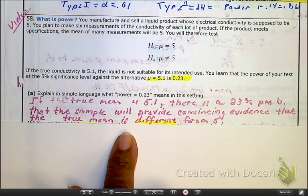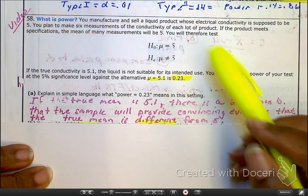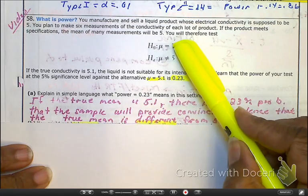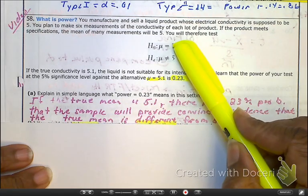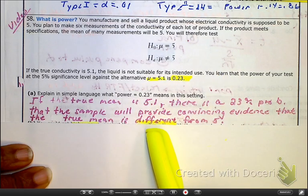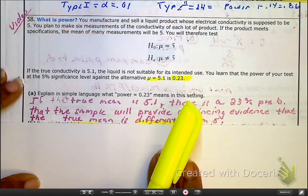Because remember, in this scenario, type 2 is that we support the H0, so we support that it is the same when we should not have. And so, this is the probability of detecting that it is different. And that's what power is. So let's go ahead and read the second one.